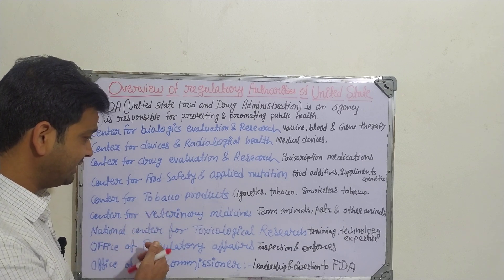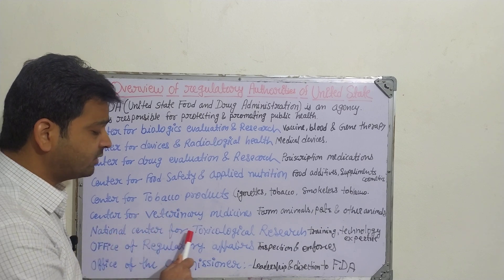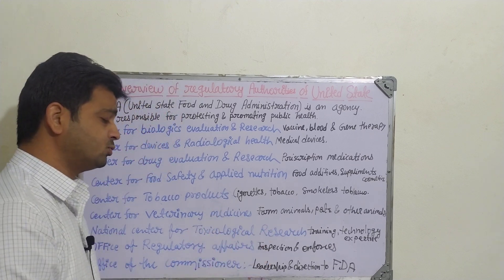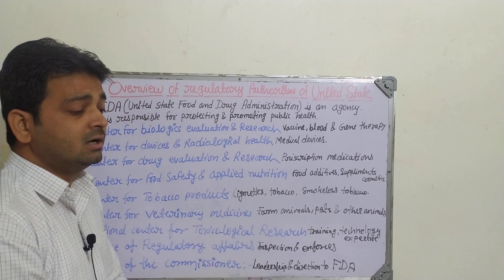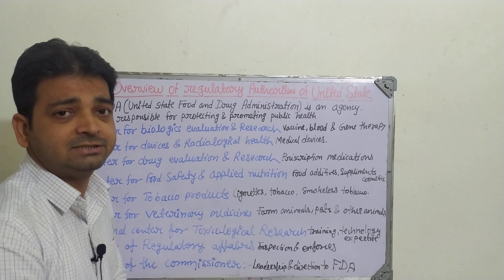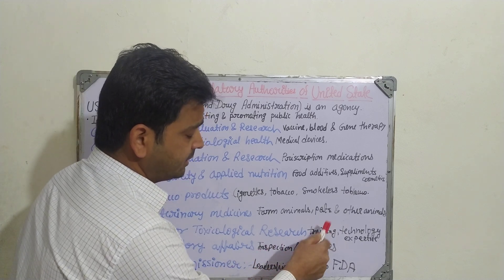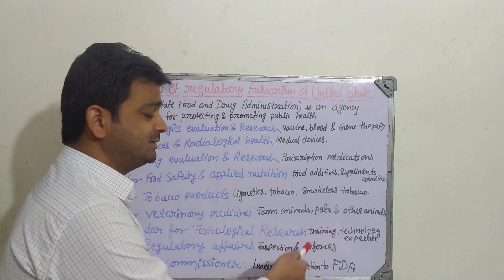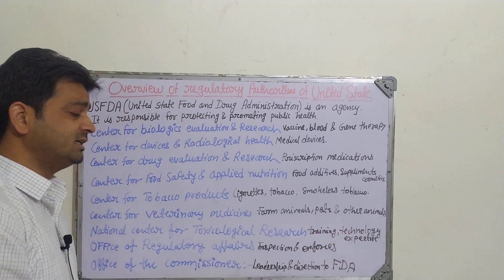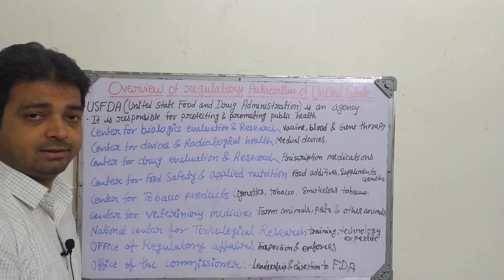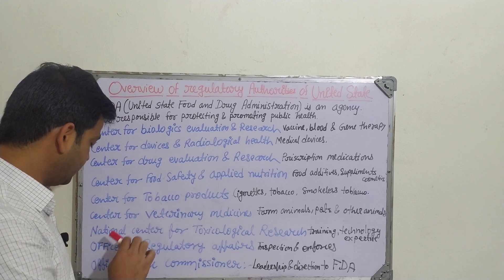The next one is a research center — the National Center for Toxicological Research. Here, toxicity is identified, toxicants are identified and regulated. For that, training, technology, and expertise — those things are provided by the USFDA under this center.